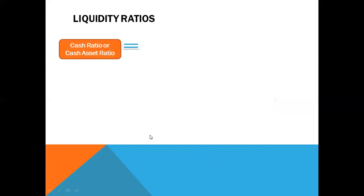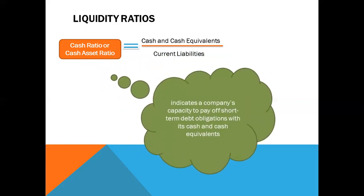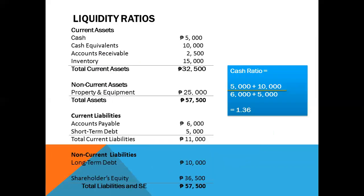Another liquidity ratio is the cash ratio, or cash asset ratio, which equals cash and cash equivalents over current liabilities. It indicates a company's capacity to pay off short-term debt obligations with its cash and cash equivalents. For example, cash of 5,000 plus cash equivalents of 10,000 divided by accounts payable of 6,000 plus short-term debt of 5,000 gives a cash ratio of 1.36.